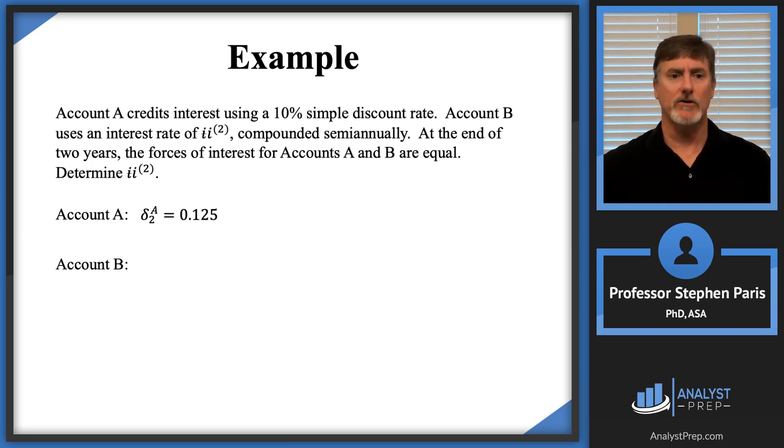So now let's move on to account B. Account B, I'm given an I upper 2. So the first thing I'm going to do with that is divide it by 2, get the semi-annual effective interest rate. I'm going to call that S. So once I have S, then I can get, once I have the semi-annual effective interest rate, I can get the accumulation function. A of T would be 1 plus S to the T power.